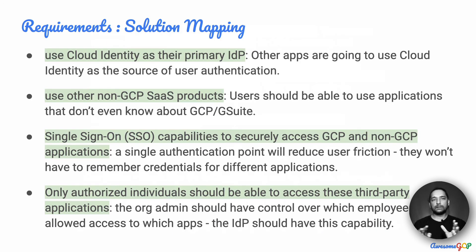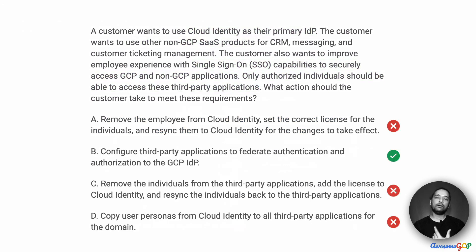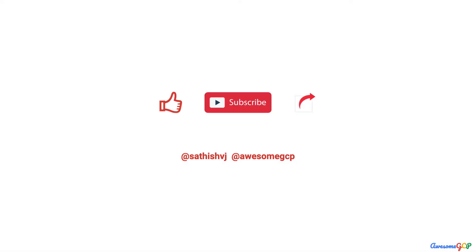So if you consider the requirements, this solution matches all the requirements we had at the beginning. Therefore, Option B — to configure third-party applications to federate authentication and authorization to the Google Cloud IDP — becomes our best option. Now it's time to subscribe to all the great content we've got lined up for you to learn Google Cloud and to help you with the certifications.